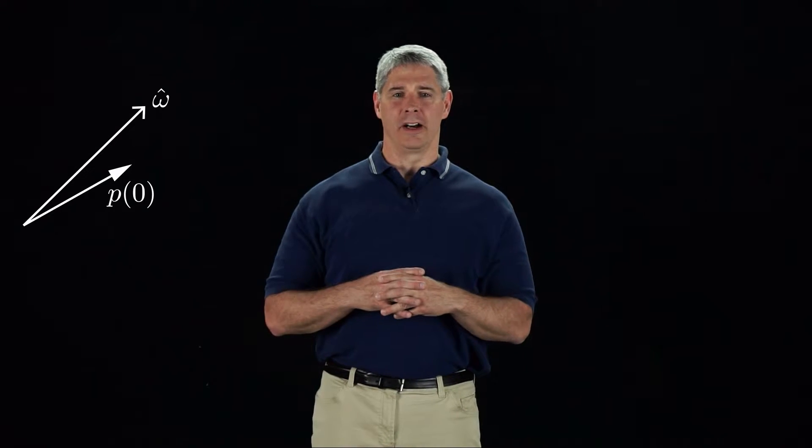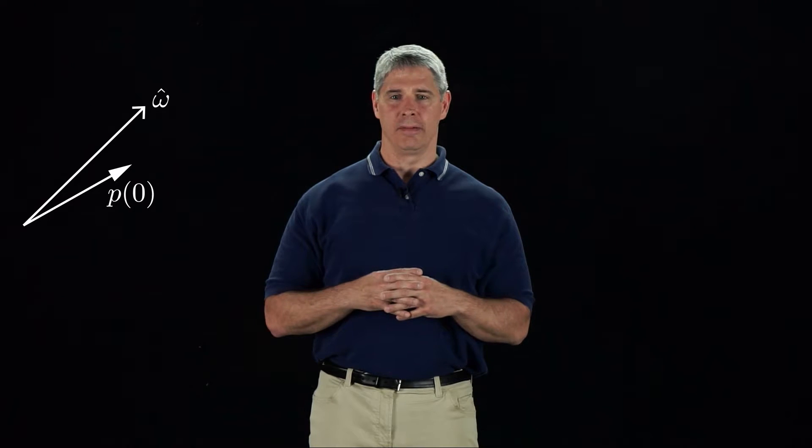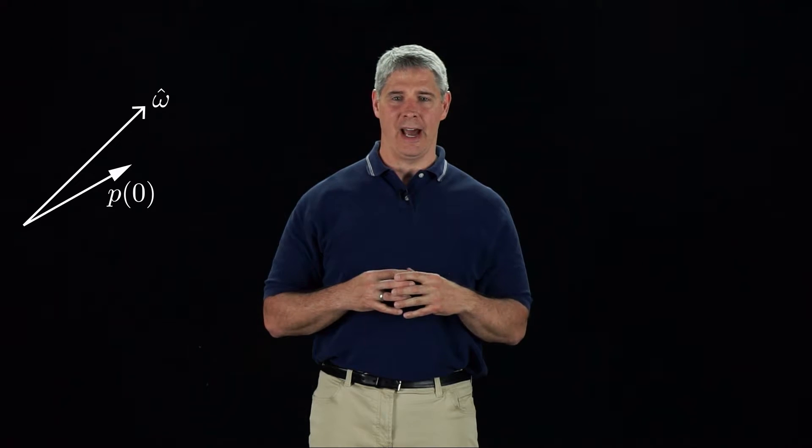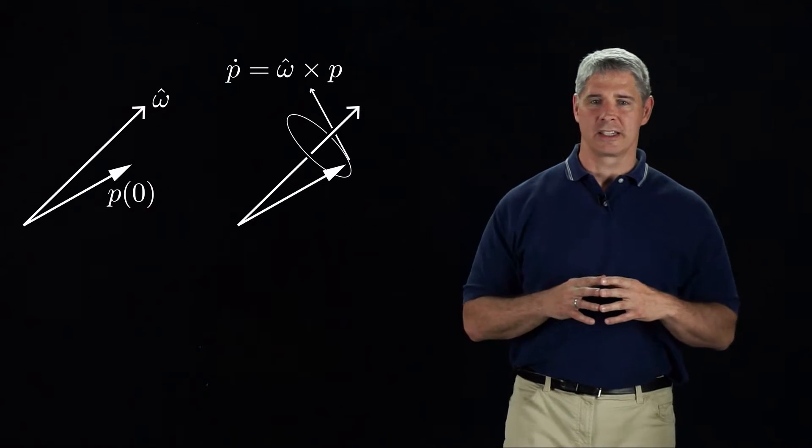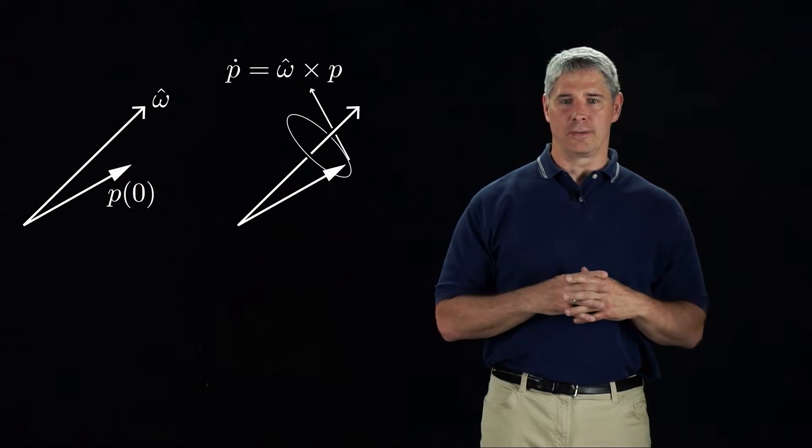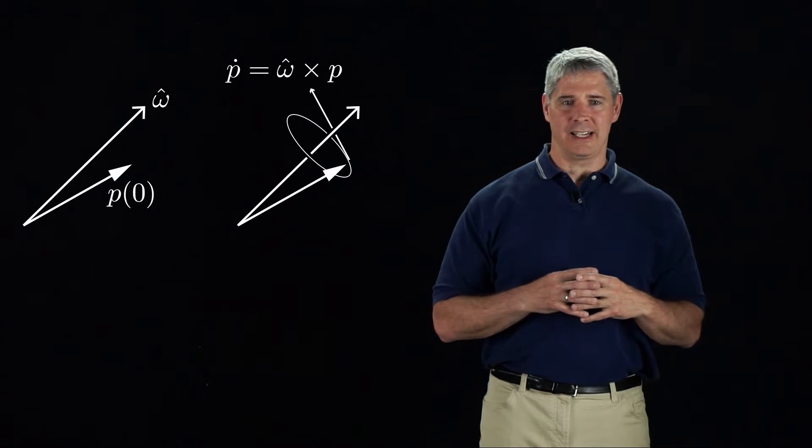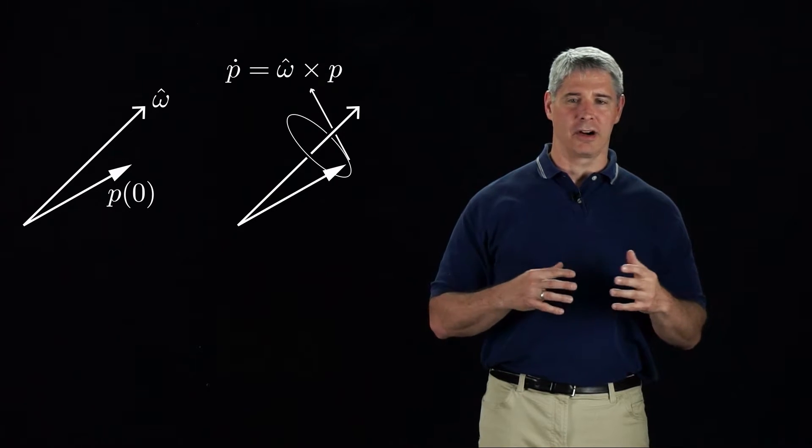Here is a picture of our initial vector p at time 0 and the unit rotation axis omega hat. As p begins to rotate, it traces out a circle around the rotation axis. The three-vector linear velocity is tangent to the circle at any time and is given by omega hat cross p.